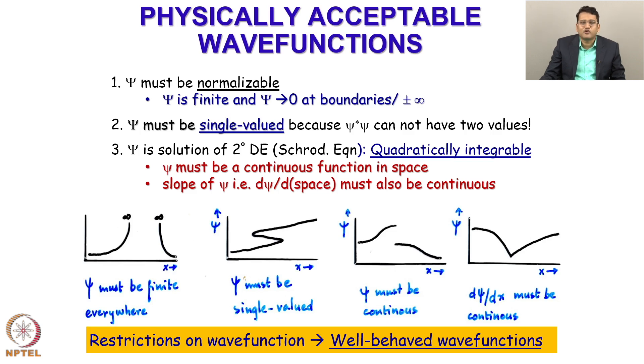So, postulate one only says that psi star psi is related to probability density. The consequence of the postulate is the restrictions on well-behaved wave function. So, whatever wave function we will be solving in a computer should follow these restrictions.